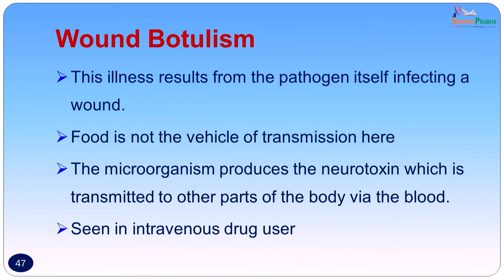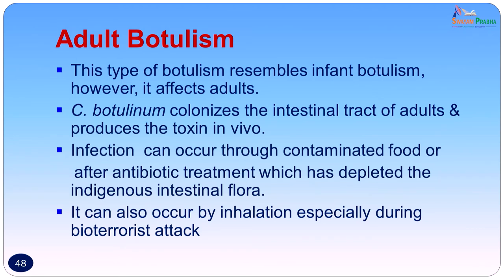Wound botulism results from the pathogen itself infecting a wound — food is not the vehicle here. The organism enters through soil, multiplies in the wound, and produces a neurotoxin transmitted to other parts of the body via blood. This is often seen in intravenous drug users with unsterile syringes. Adult botulism resembles infant botulism but occurs in adults — Clostridium botulinum colonizes the intestinal tract and produces toxin in vivo, occurring after contaminated food or antibiotic treatment that depletes indigenous intestinal flora, allowing the organism to multiply and sporulate.